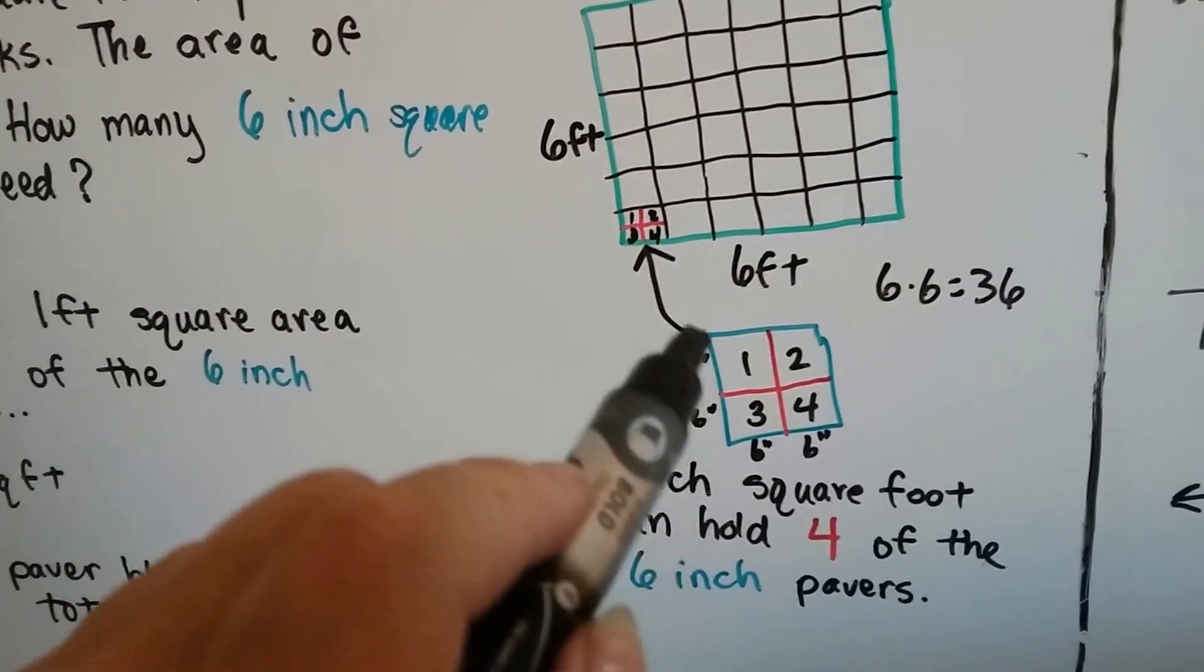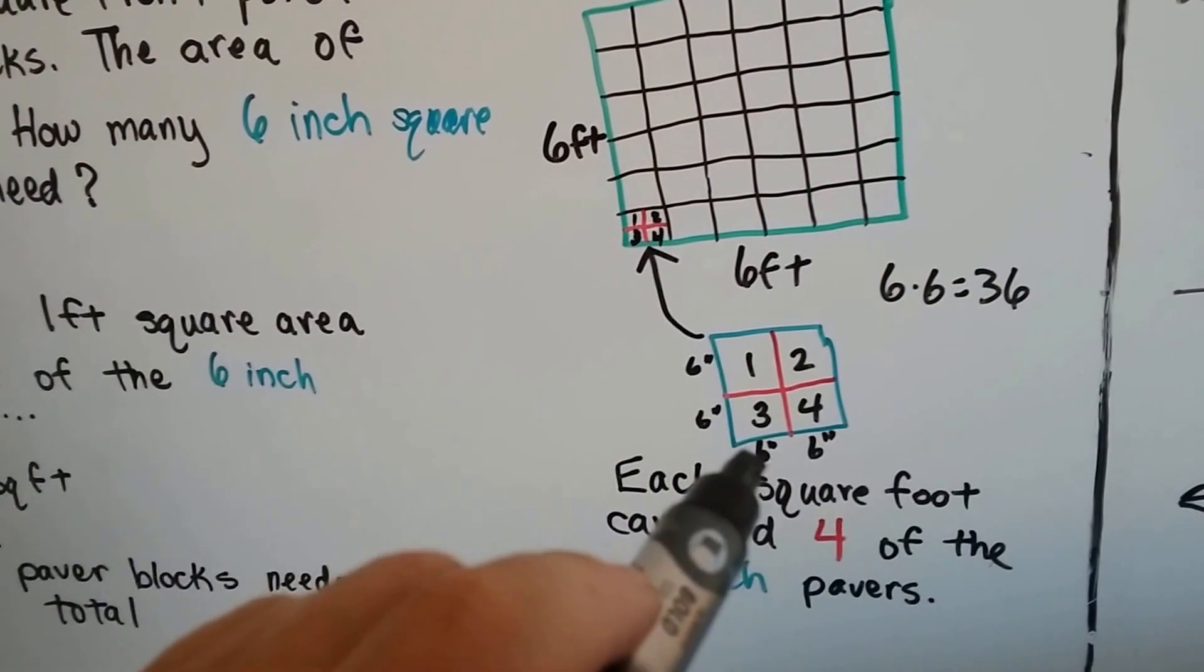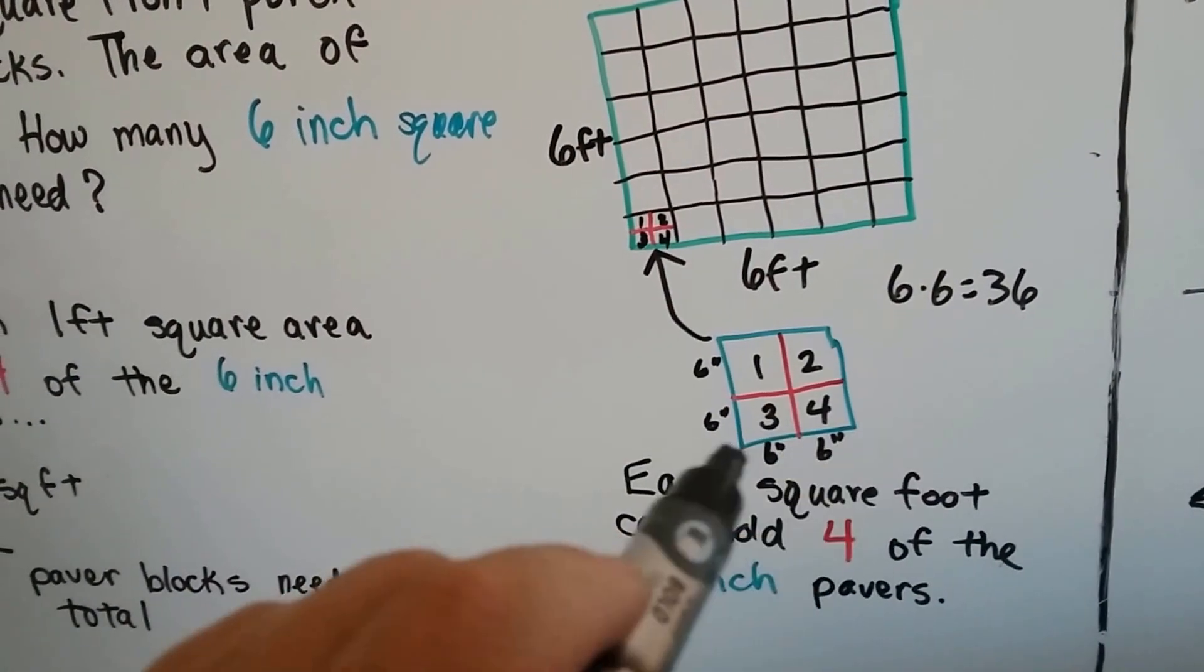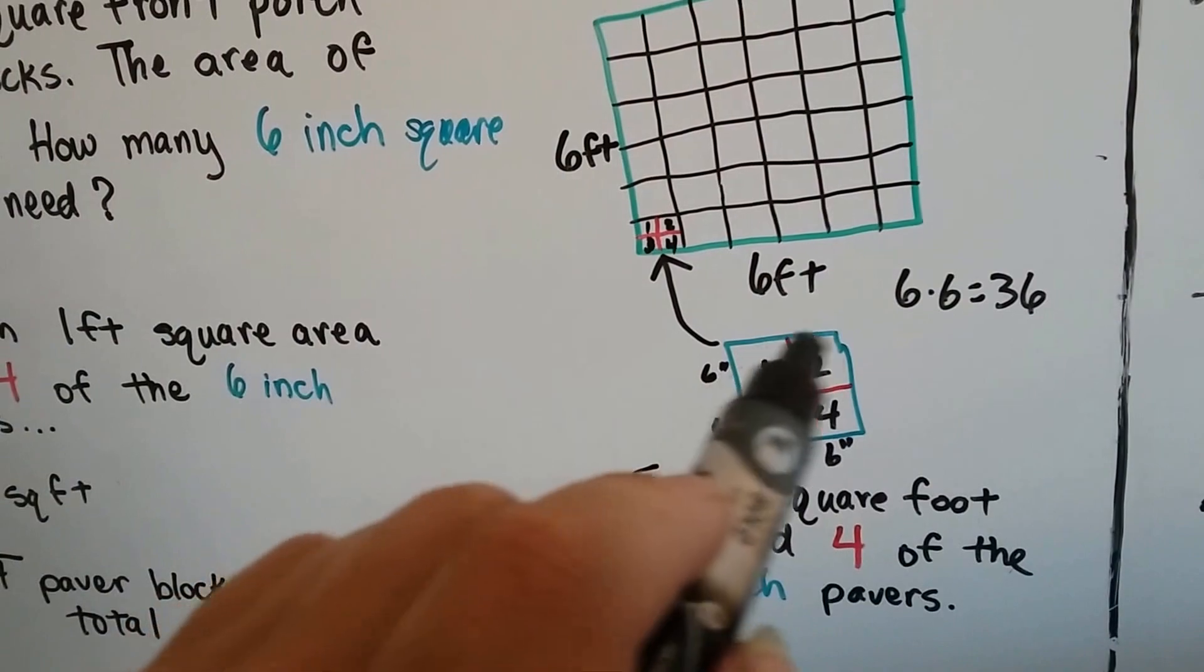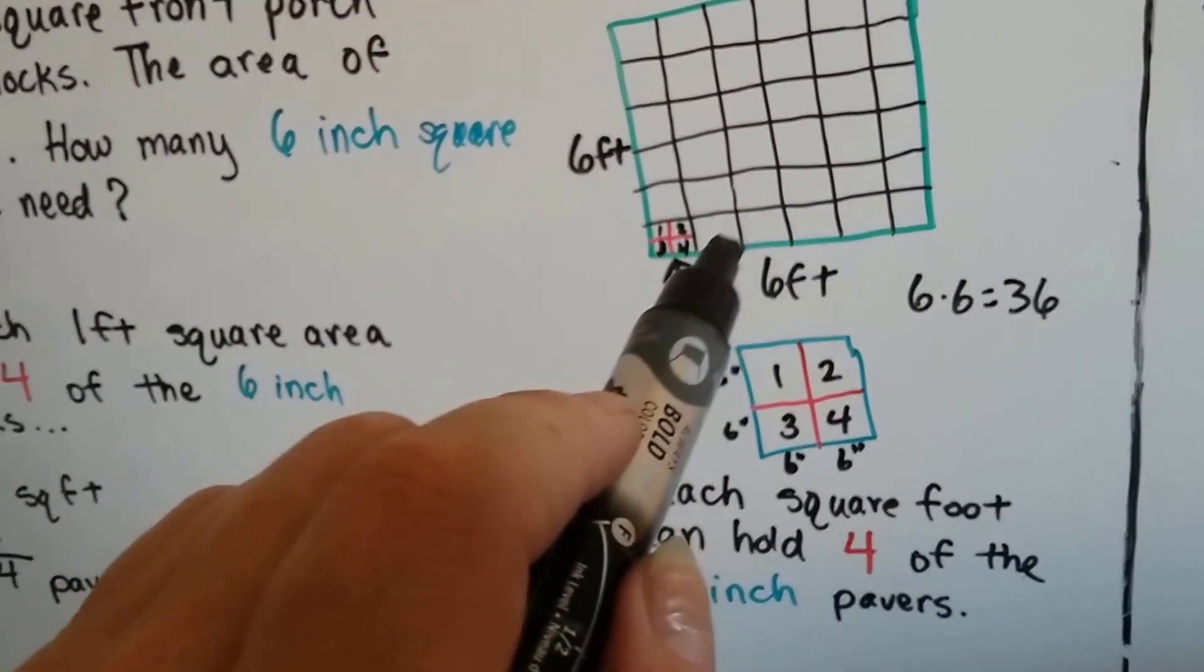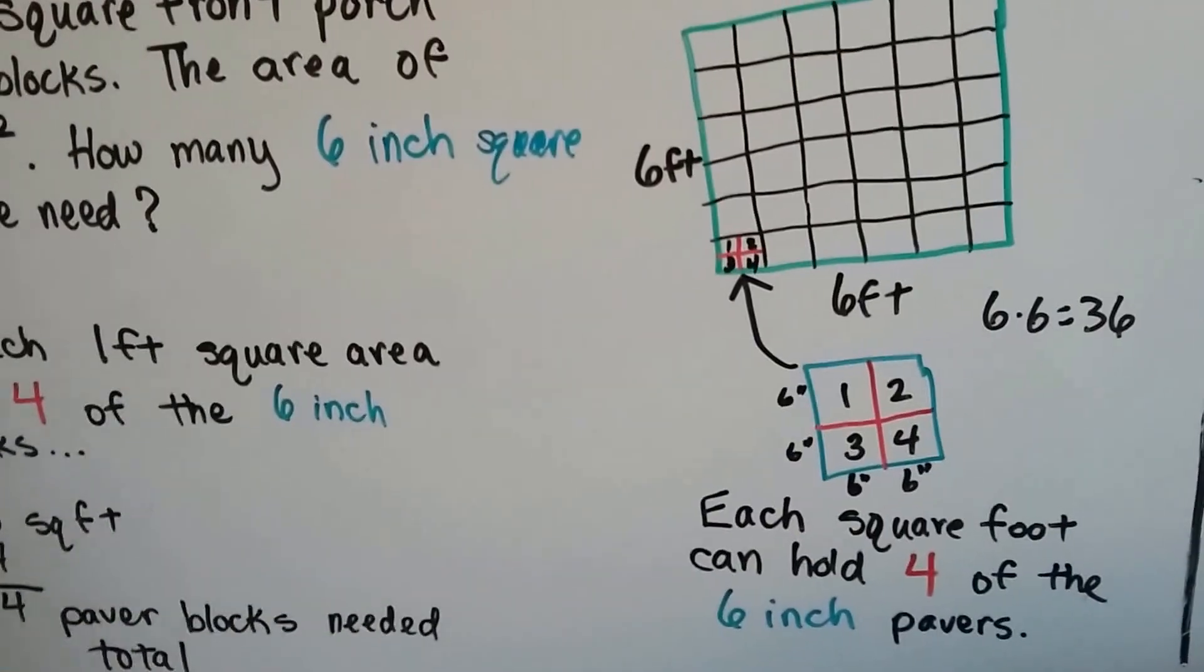6 inches and 6 inches makes one foot this way, and 6 inches and 6 makes one foot this way. So he's going to fit four paver blocks into each of these square feet. Bob is smart.